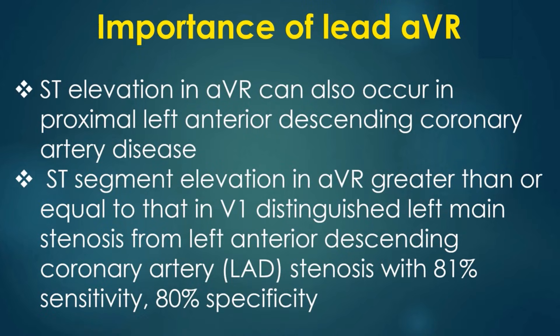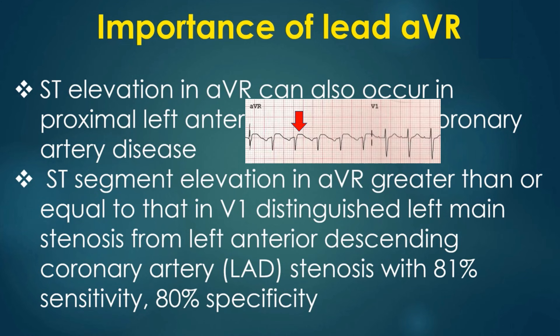ST elevation in AVR can also occur in proximal left anterior descending coronary artery disease. ST segment elevation in AVR greater than or equal to that in V1 distinguished left main from left anterior descending coronary artery stenosis with 81% sensitivity and 80% specificity.